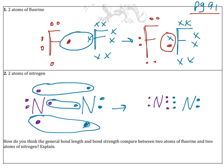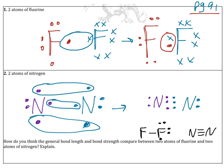Just as we represented fluorine with a single dash, we represent nitrogen with a triple bond — three dashes. Each dash represents a pair of electrons, so each bond equals two electrons. The triple bond has a total of six electrons. Lone pairs — the pairs not involved in bonding — should also be included in the representation. Nitrogen has one lone pair on each nitrogen.